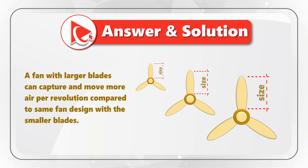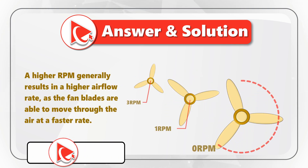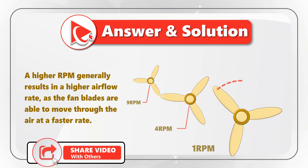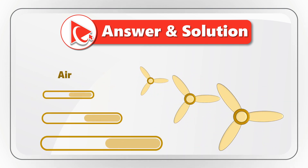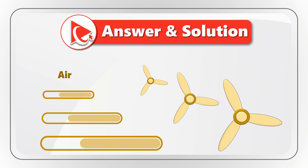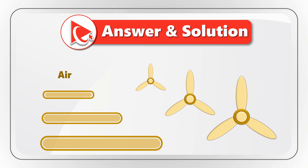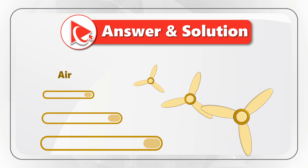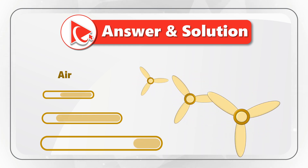The first one is the size of the fan's blade. The second one is the rotational speed of the fan, which is measured in RPMs — revolutions per minute. A fan with larger blades can capture and move more air per revolution compared to the same fan design with smaller blades. The rotational speed of the fan also affects the airflow.